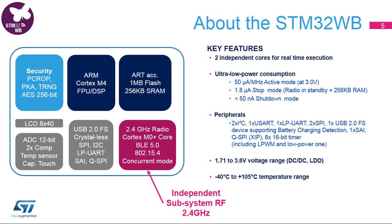The STM32WB embeds a dual-core architecture with a Cortex-M4 core used as an application processor (CPU-1) and a Cortex-M0+ core used as connectivity processor (CPU-2). The advantage of this dual-core architecture is that the connectivity processor handles all real-time aspects of the wireless protocols, and the application processor can freely be dedicated to the application with no real-time constraints. The radio subsystem is the third subsystem that can work autonomously and independently from the two CPUs.